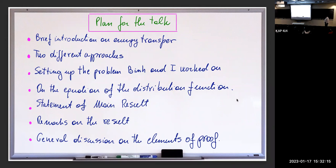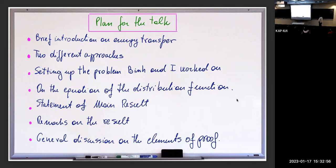There are two different approaches: one which is more deterministic and one which is more probabilistic. I started with the first one a long time ago. Then I will set up the problem that Bin and I worked on and go deeper into the statement of the theorem, which is basically finding in a rigorous way the derivation of what we call the wave kinetic equation. There are a few important elements, including a distribution function and remarks on the result and the tools used to prove this rigorous derivation.